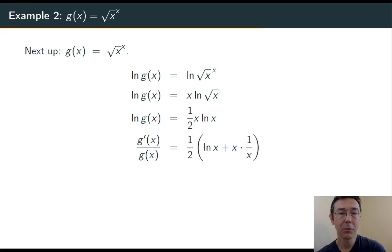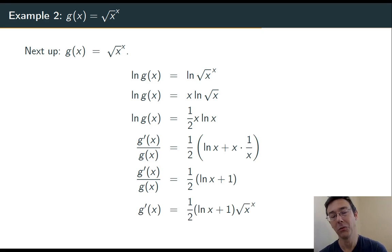On the right hand side there's a product rule. This should pretty much always be the case. So one half times natural log of x plus x times 1 over x. So g prime over g is one half ln x plus 1, and g prime is one half ln x plus 1 times the square root of x to the x power.